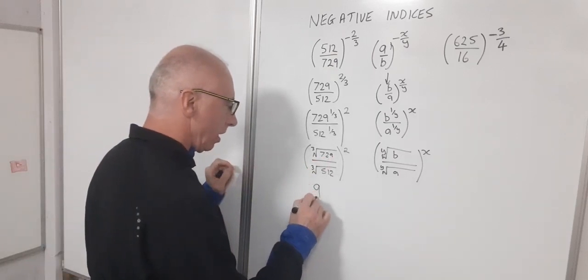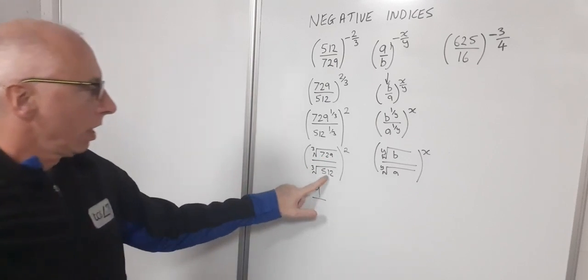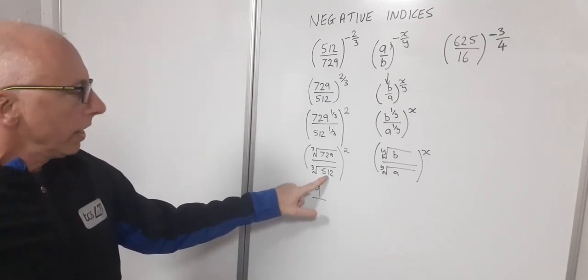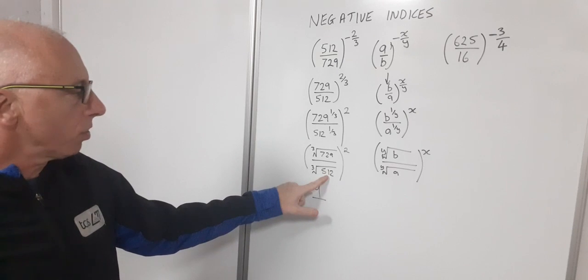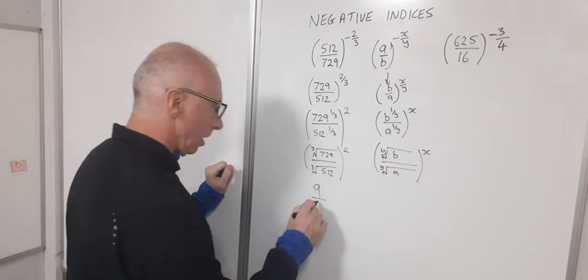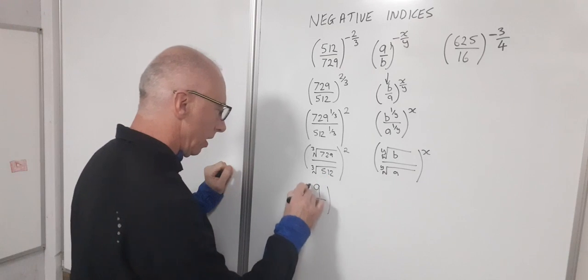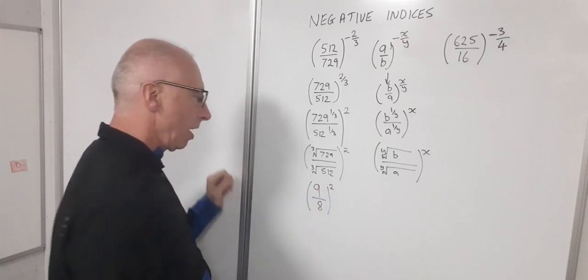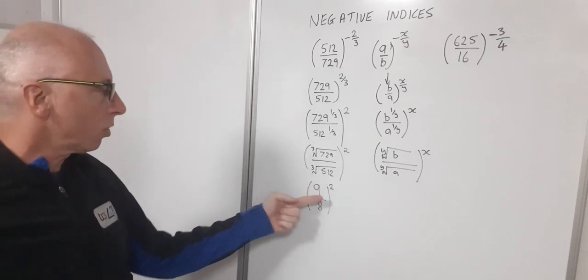So now I've got 9 over, so 512, 8 times 8 is 64, 64 times 8 is 512. So my cube root of 512 is 8. So I've got 9 over 8 still in brackets and now what I can do I can bring the squared inside.